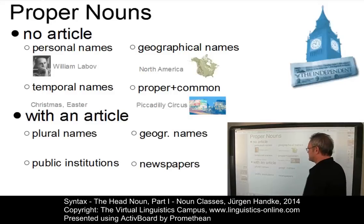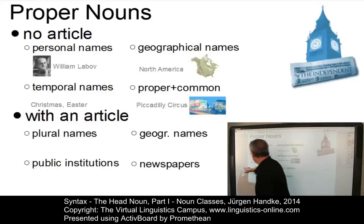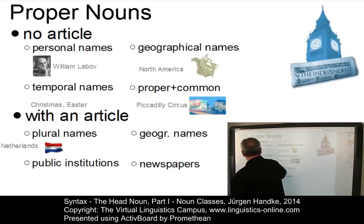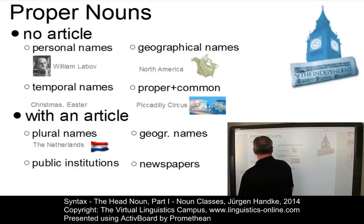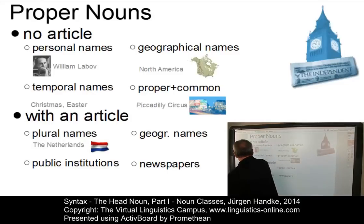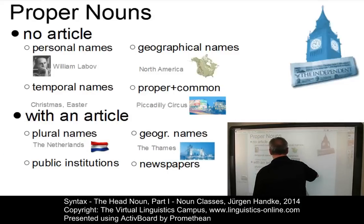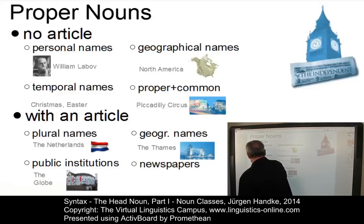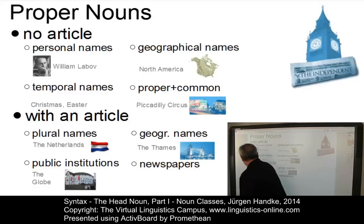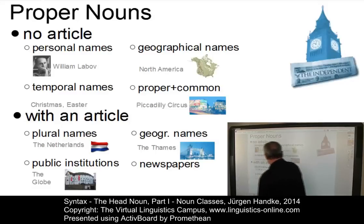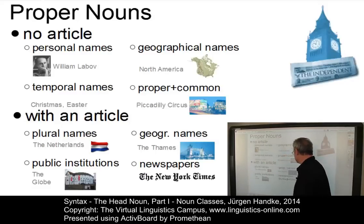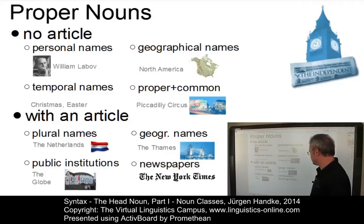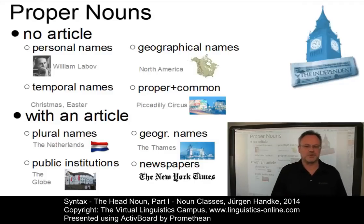And then there are proper nouns that have an article. For example, plural names such as the Netherlands, or geographical names — you all know — the River Thames, the Thames. Or public institutions, such as the famous theatre The Globe. And particularly newspapers, such as the New York Times or The Observer and so on.